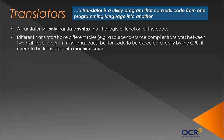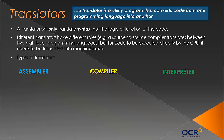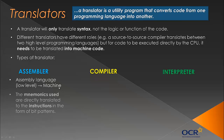There are different types of translators with different roles. There's a source-to-source compiler which translates between two high-level programming languages. But if you want code to be executed directly by the CPU, it needs to be translated from a high-level language into machine code. You need to know three types of translator. First, an assembler — this converts assembly language, a low-level programming language, into machine code. The mnemonics are translated directly into instructions in the form of bit patterns; there is a direct translation occurring.